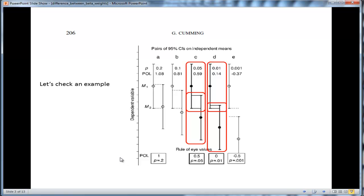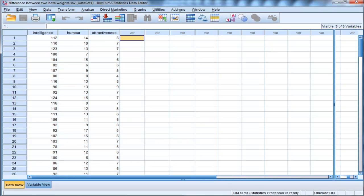And I'll show you how to get those confidence intervals for both unstandardized and standardized. And so, this is a multiple regression example where attractiveness is the dependent variable, humor is an independent variable, and intelligence is an independent variable.